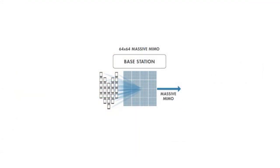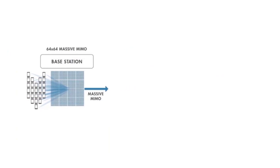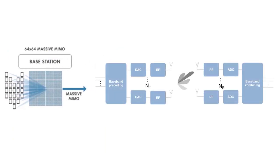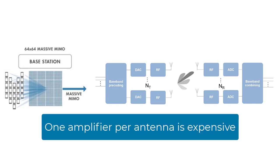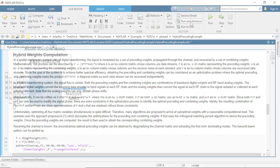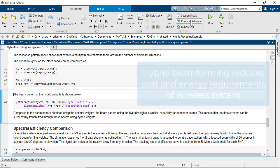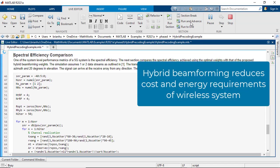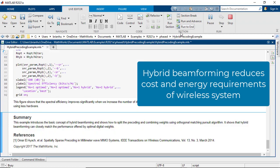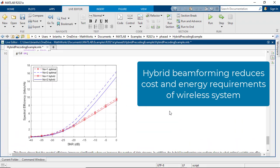The large number of antennas employed in Massive MIMO leads to a need for more amplifiers. This becomes an issue as an increase in amplifiers drives up the cost and power requirements of your system. Hybrid beamforming is typically used to partition the beamforming into analog and digital dimensions, and therefore reduce the cost and energy complexity.